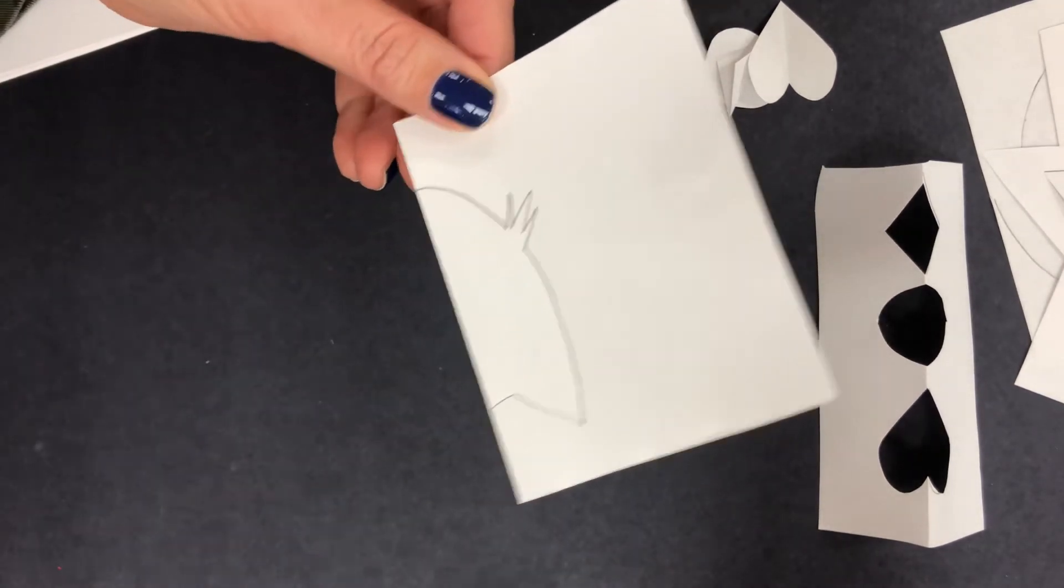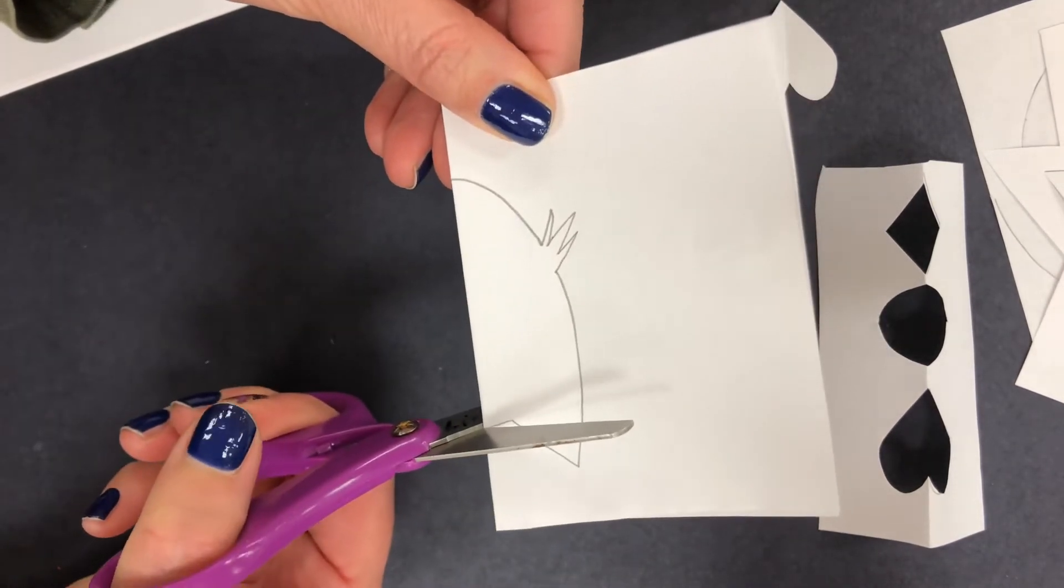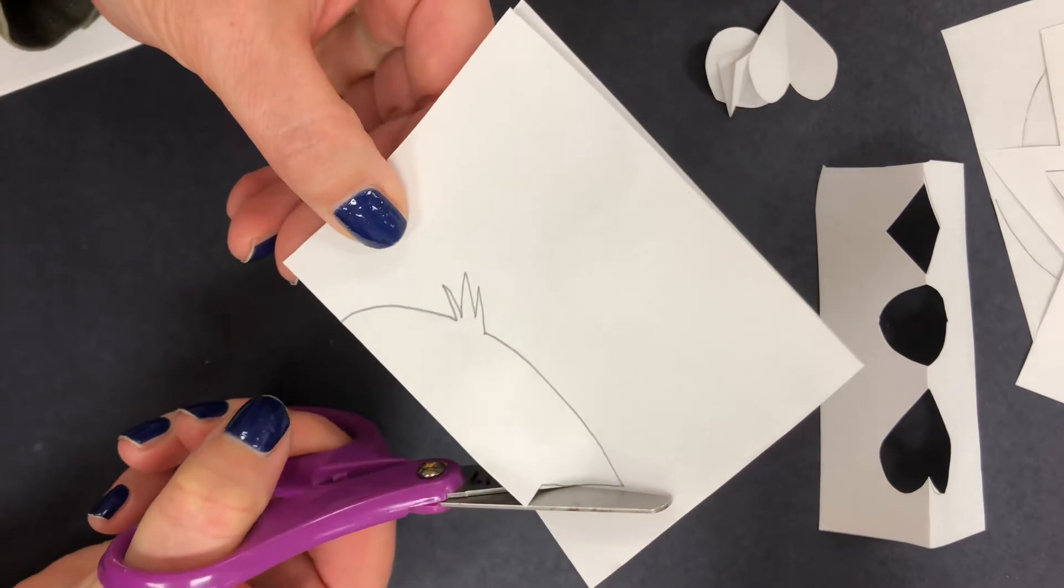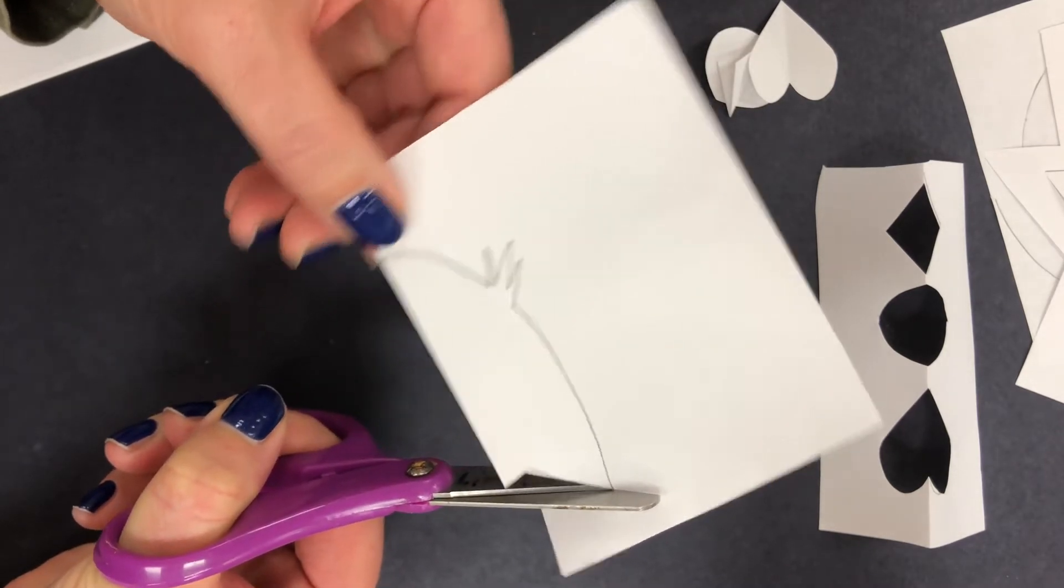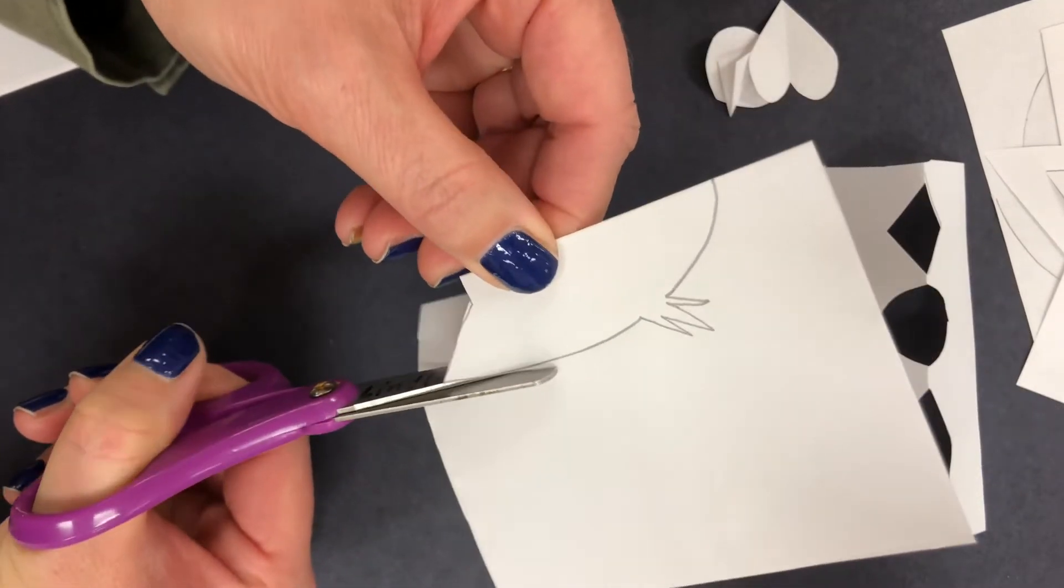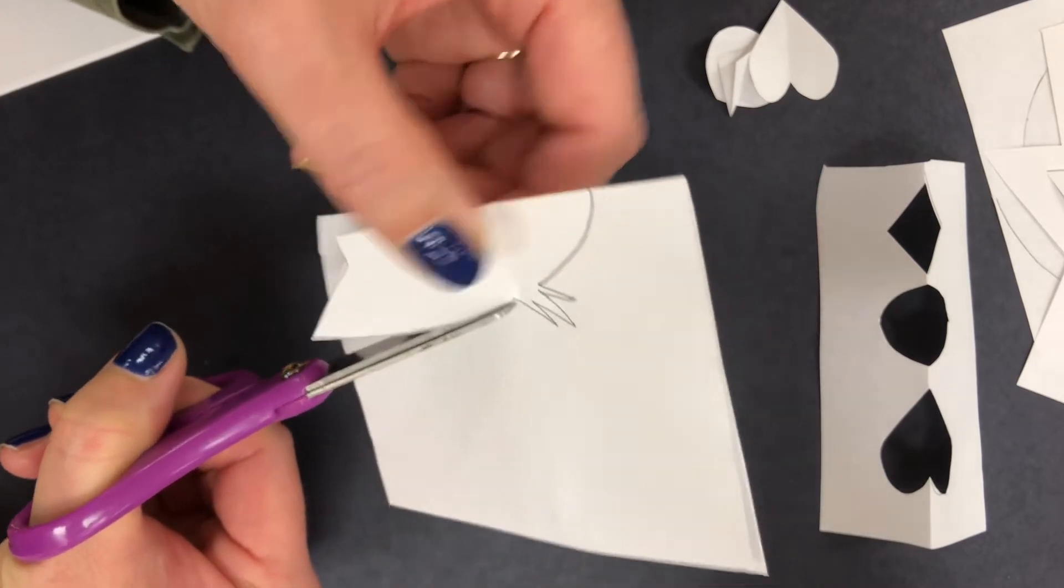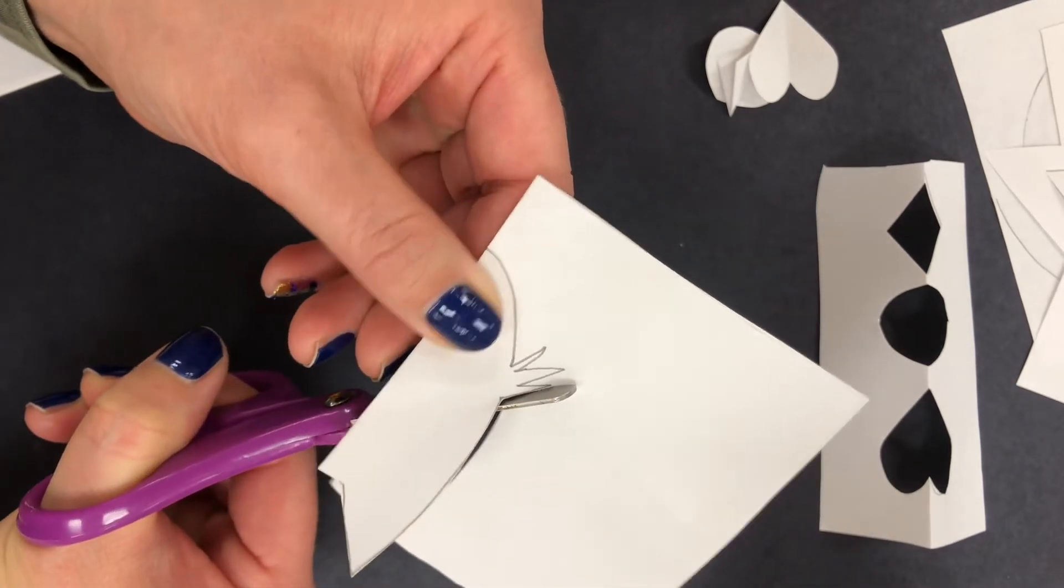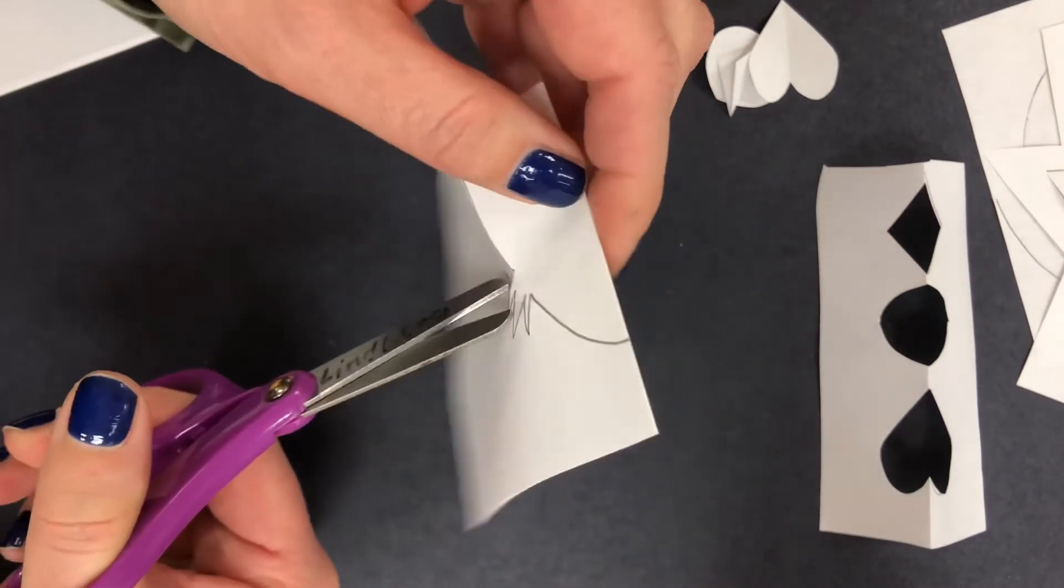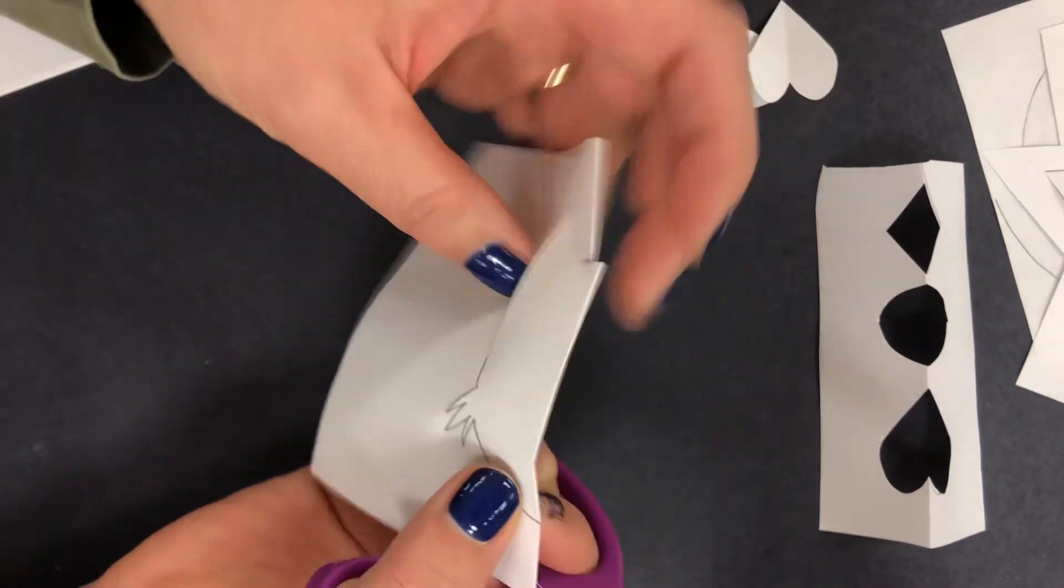Now I can take my scissors and go in on that folded part. Notice how my scissors are staying straight and my paper is doing the turning. Those details might be a little small for me to get, but I think if I turn my paper around I'll be able to get them.